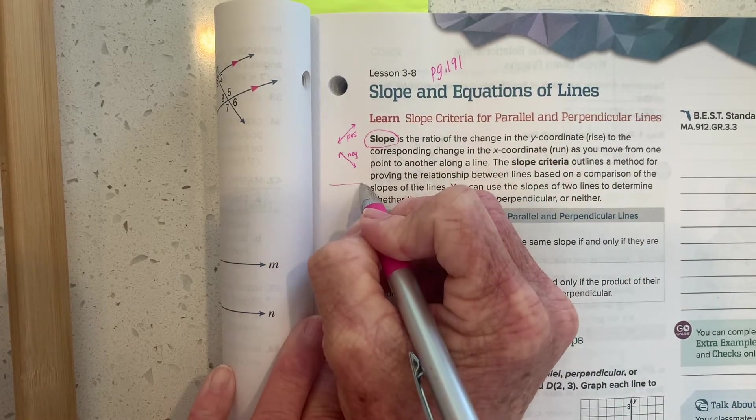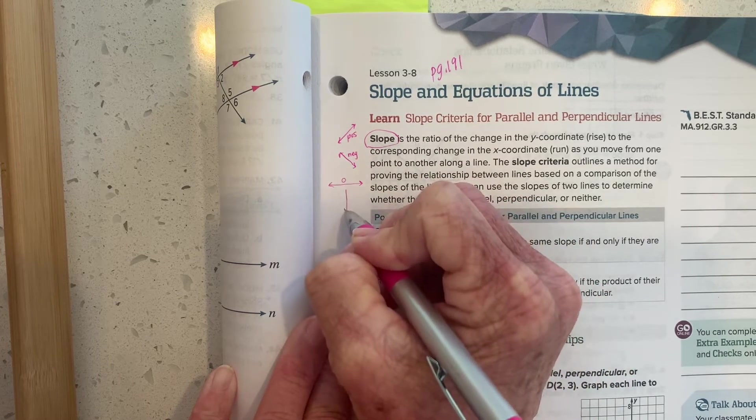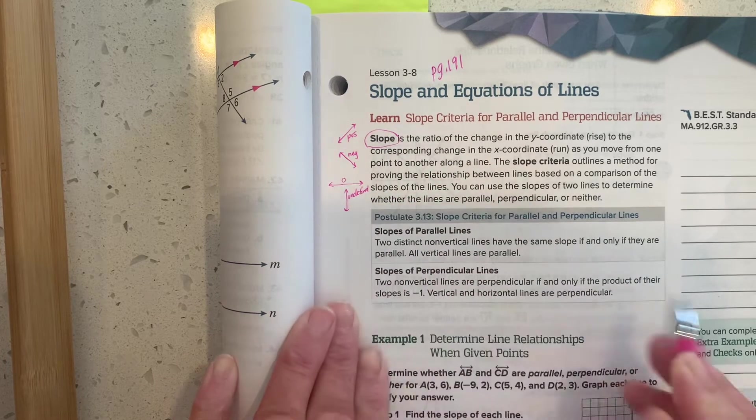If the line is perfectly horizontal, it has a slope of zero. And if the line is vertical, it doesn't have a slope. That slope is undefined.